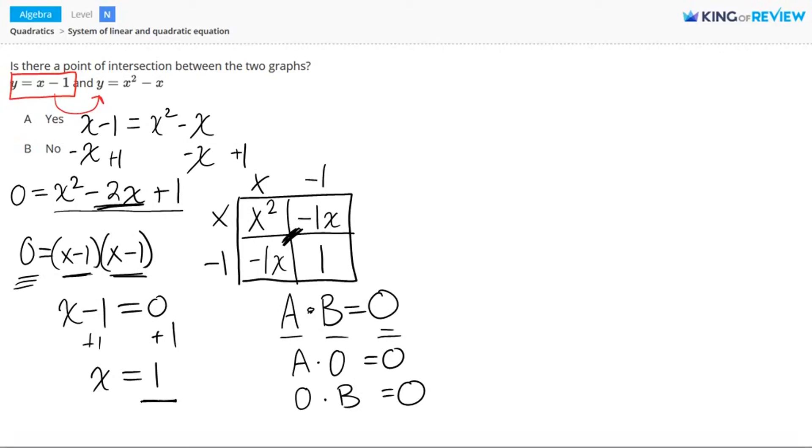Now 1 is a real number, therefore I know that there is a point of intersection between these two graphs. There's one point of intersection.